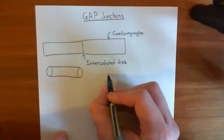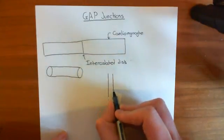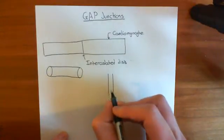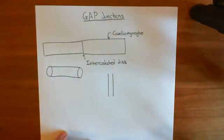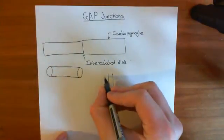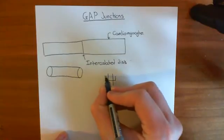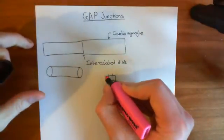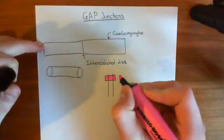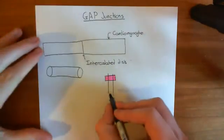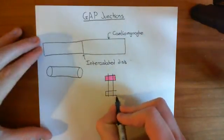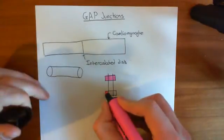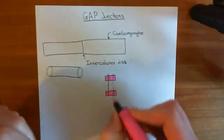Let's have a zoom-in picture of this intercalated disc. So here are the two membranes. Now, you have two major forms of connection between these cardiomyocytes: one which is an electrical connection, which is the gap junctions, and one which is actually a structural connection holding the two together. The structural connection between the two cardiomyocytes - you'll have multiple of them between the two cells - these are what are known as desmosomes.